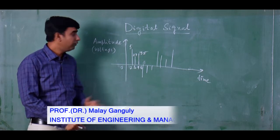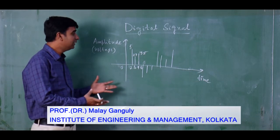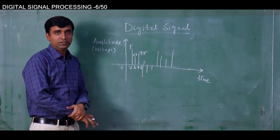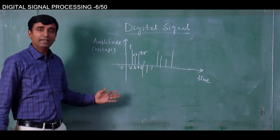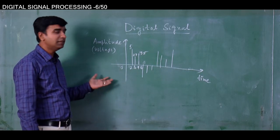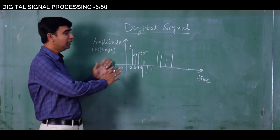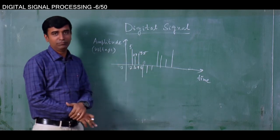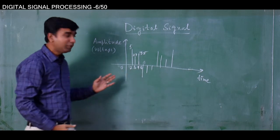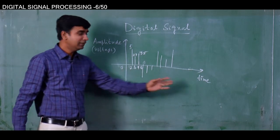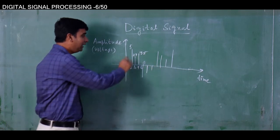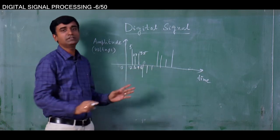In today's lecture we will have a detailed discussion on what is a digital signal. In the previous lectures we have already discussed that a digital signal is nothing but an analog signal sampled in time, so in this picture you may clearly understand that it is a sampled signal which has values at discrete instances of time.